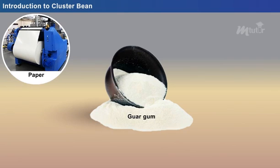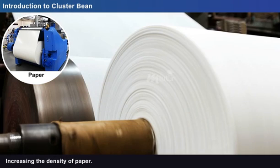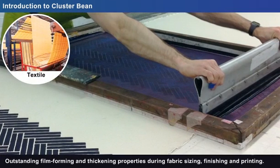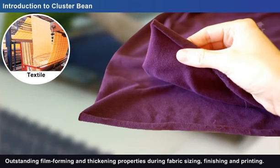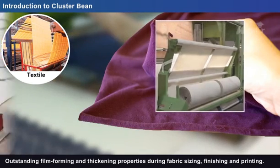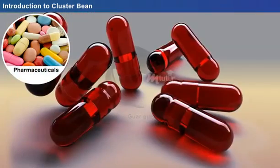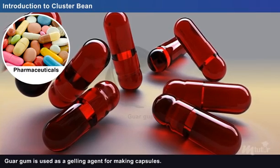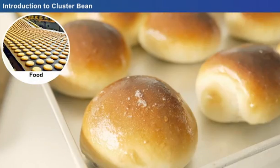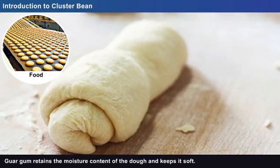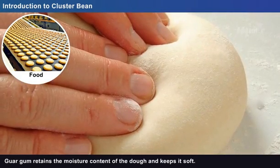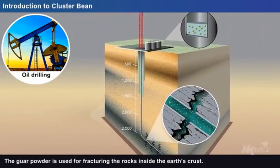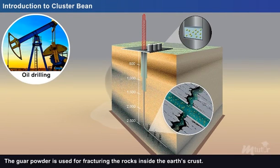In the paper industry, Guar Gum is used for increasing the density of paper. In the textile industry, Guar Gum offers outstanding film forming and thickening properties during fabric sizing, finishing, and printing. In the pharmaceutical industry, Guar Gum is used as a gelling agent for making capsules. In bakery and confectionery, Guar Gum retains the moisture content of the dough and keeps it soft. In the oil and drilling industry, the Guar powder is used for fracturing the rocks inside the earth's crust.